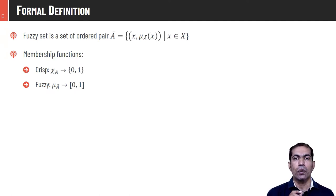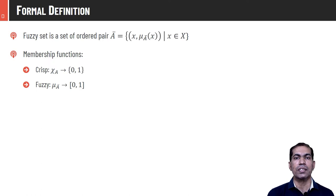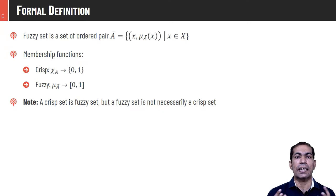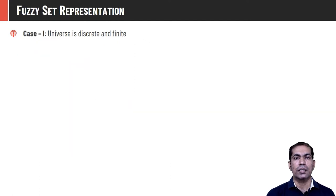For χ there are only two possibilities: 0 or 1. For μ there are infinite possibilities between 0 and 1 — any real number is possible. A crisp set is a fuzzy set, but a fuzzy set is not necessarily a crisp set. We can consider a crisp set as a fuzzy set with extreme values (only 0 or 1 membership). The universe of discourse for fuzzy sets may be discrete and finite.